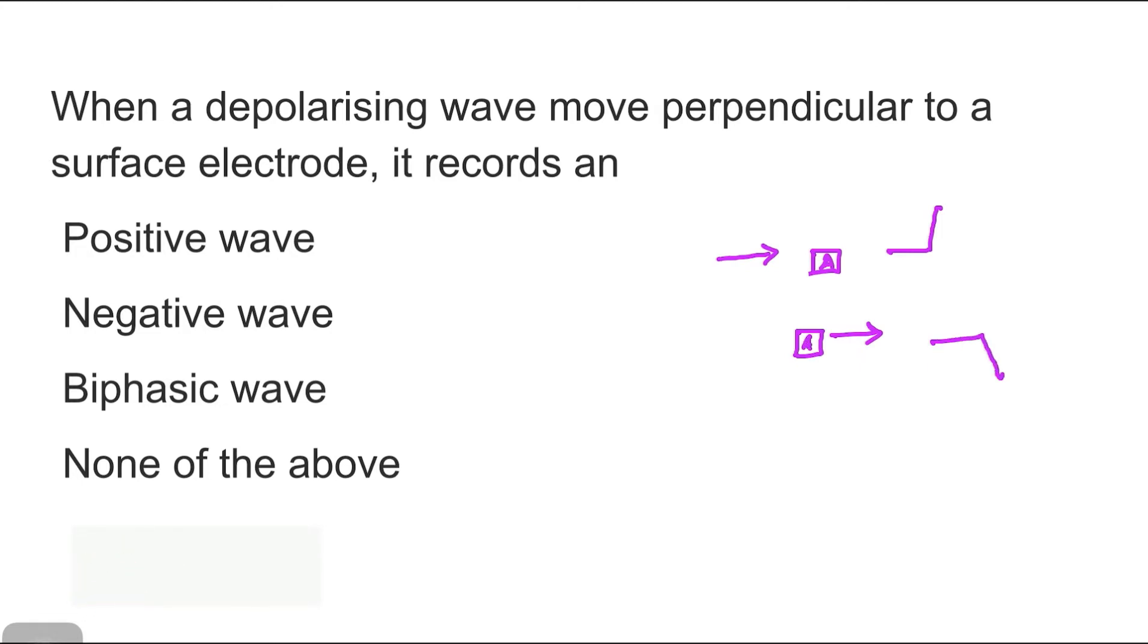However, when a depolarization wave moves perpendicular to the electrode, then it will cause a biphasic deflection. So this is clearly explained in the course that when a cardiac muscle is like this and an electrode is placed here. When the depolarization wave moves towards the electrode, it will have a positive deflection. When it reaches the point where it is in front of the electrode, it will have a downward strain and come to the baseline. When it moves away from the electrode, it will have a negative deflection. Then when it comes perpendicular, it will have a biphasic deflection like this. So it is clearly explained.